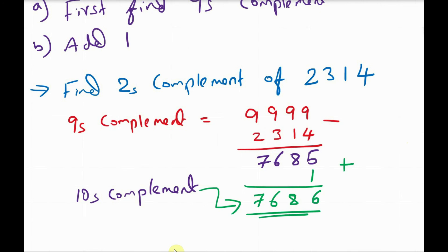So this is quite simple. Whatever be the number, this is the procedure. This is all about 1's complement, 2's complement, 9's complement and 10's complement. Keep in mind that 1's complement and 2's complement are used for binary numbers, and 9's complement and 10's complement are used for decimal numbers. Thank you.